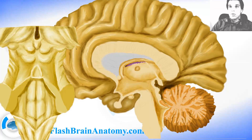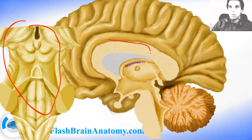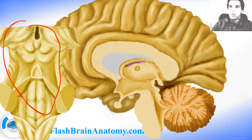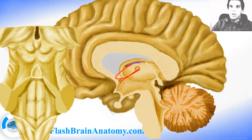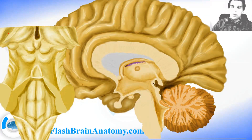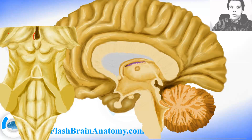Here we have both illustrations next to each other. This illustration is what we would see if we remove this part of the brain and look at the brain stem from this perspective. This space here is the third ventricle, and this part was the pineal gland. So the pineal gland is one part of the epithalamus. Another part of the epithalamus is the posterior commissure.